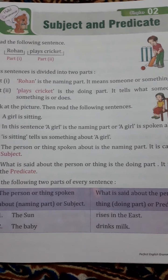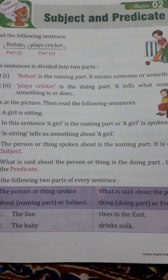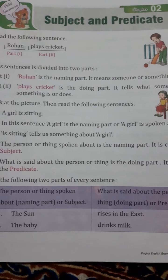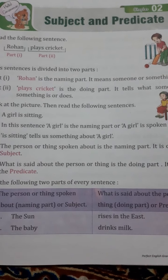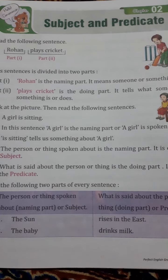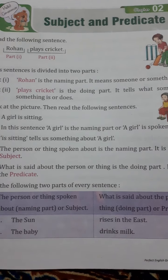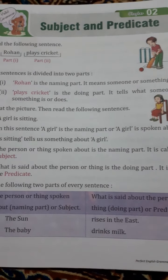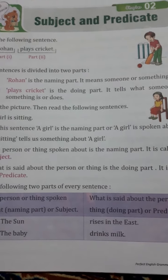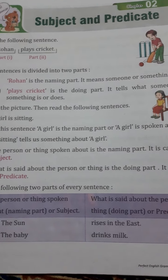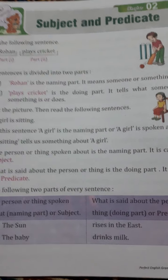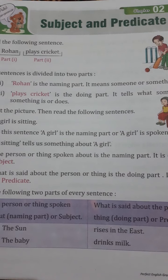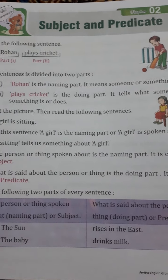What is subject and predicate? The sentence has two parts: subject and predicate. Subject is the naming word, and predicate tells something about the subject. Subject is the main naming word and predicate is something about the subject.